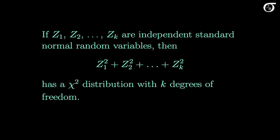The relationship between the standard normal distribution and the chi-square distribution goes further than this. If z1 through zk are independent standard normal random variables, then if we square them all and add them, their sum has a chi-square distribution with k degrees of freedom. Note that the degrees of freedom are the number of independent squared standard normal random variables that we are adding up.